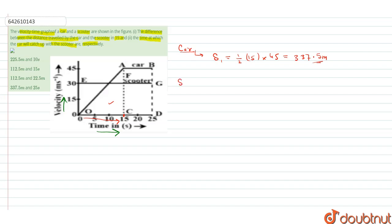Now for the scooter, we can see that it has uniform velocity. Till 15 seconds, we have this triangle. So S₂ displacement for the scooter will be 30 into 15, which results in 450 meters.